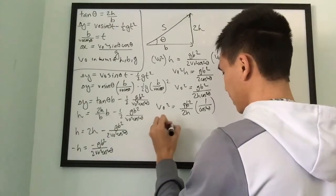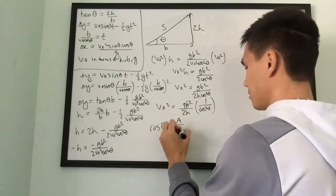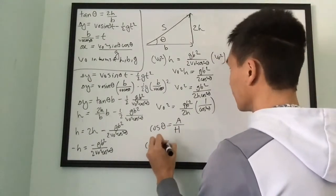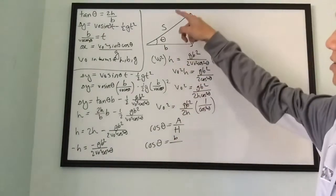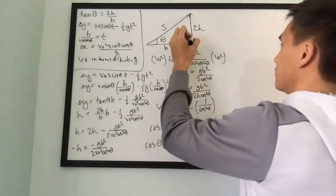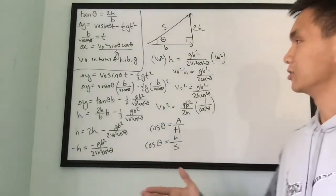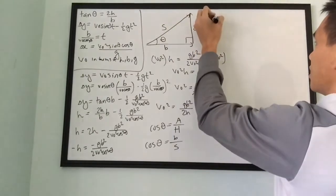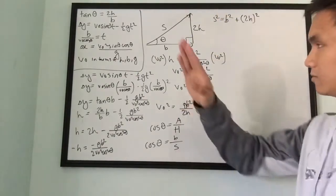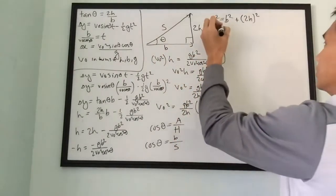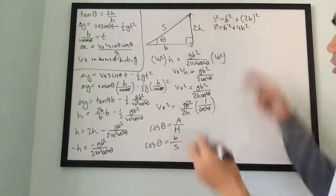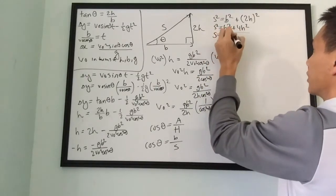Now we need to figure out what cosine of theta is. It's the adjacent side over the hypotenuse — basic geometry. The adjacent side is b and the hypotenuse is some displacement s. Since x and y components are perpendicular to each other, we can use the Pythagorean theorem: s² equals b² plus (2h)², so s² equals b² plus 4h², and s equals the square root of b² plus 4h². You can't separate the square root into two radicals due to order of operations.